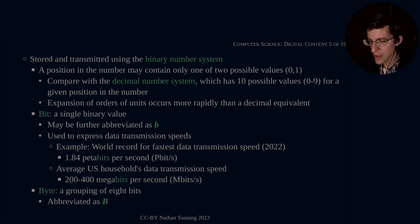The world record for the fastest data transmission speed as of 2022 is 1.84 petabits per second. And the average U.S. household's data transmission speed, also in 2022, is between 200 and 400 megabits per second.